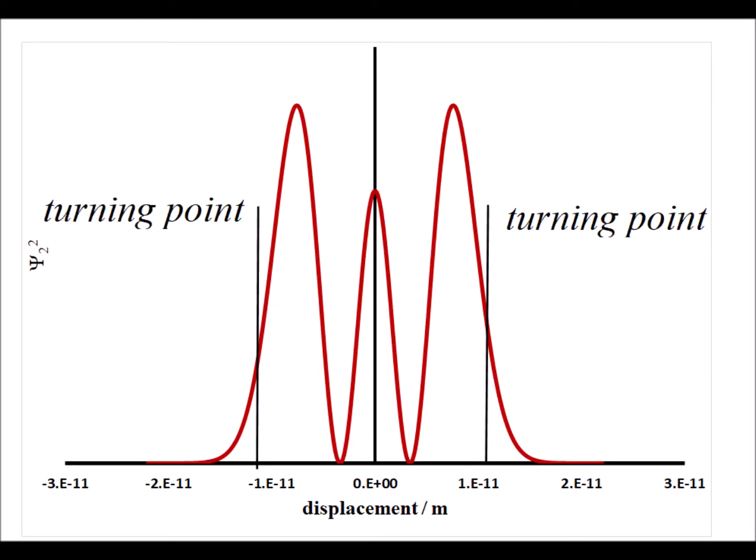Here is the probability density for the n equals two state as a function of the displacement from the equilibrium bond, and also shown as the vertical black lines, we see the classical turning points, the classical limits for that displacement.